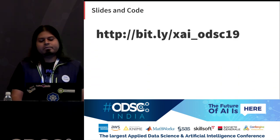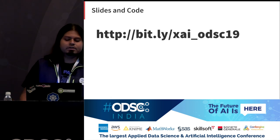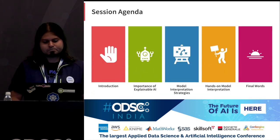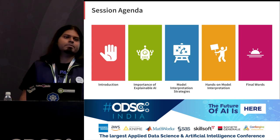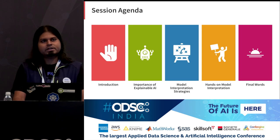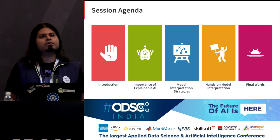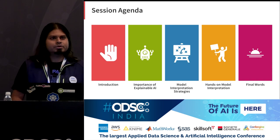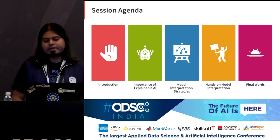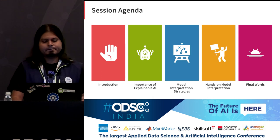Slides and code are available here — feel free to check it out; they will be posted on the conference website also. We'll briefly cover the importance of explainable AI, talk about the different types of model interpretation strategies, move into hands-on notebooks, and end with the final scope of where we can go from here.